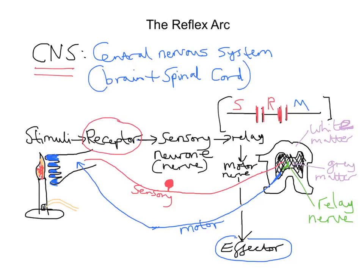Another good example of an important reflex is actually blinking. The blinking reflex is automatic — no brain involvement. You're not consciously controlling when you're blinking. And the reason why you blink is to get rid of dirt and debris from the eyes. So there we have an automatic response.